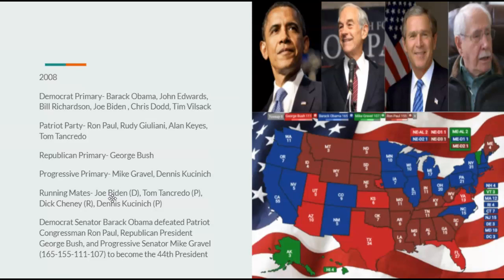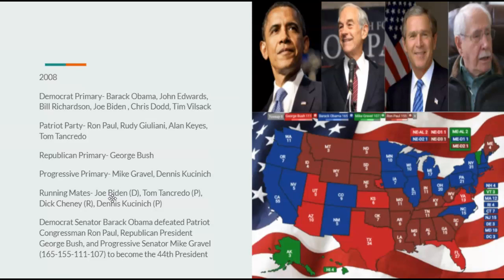Going on to the 2008 election, the Great Recession still occurs. Democrats nominate Barack Obama, Patriots Ron Paul again, Republicans President George Bush, and Progressives Mike Gravel. Running mates: Democrat Joe Biden, Patriot Tom Tancredo, Republican Dick Cheney, Progressive Dennis Kucinich. Democrat Senator Barack Obama defeats Patriot Congressman Ron Paul, Republican President George Bush, and Progressive Senator Mike Gravel, 165 to 155 to 111 to 107, to become the 44th President.